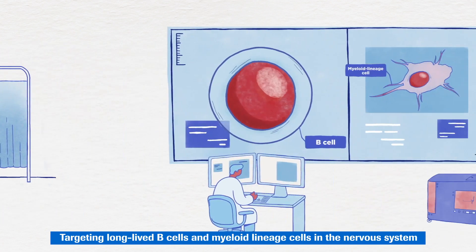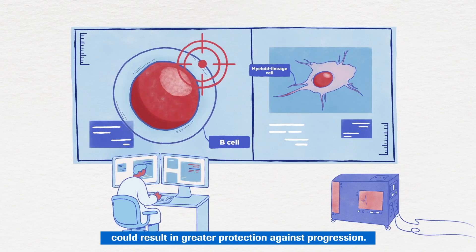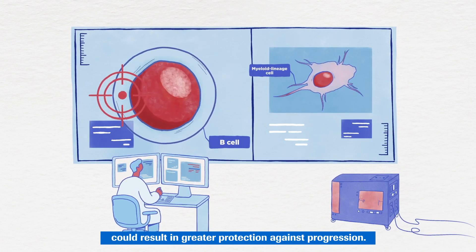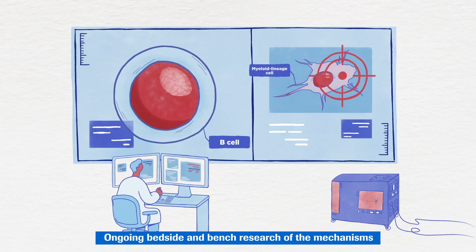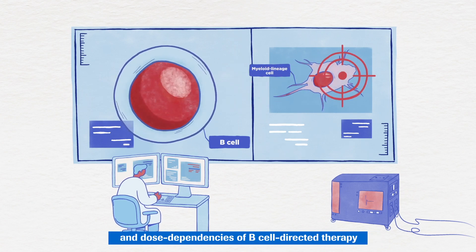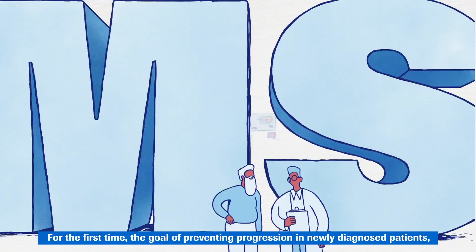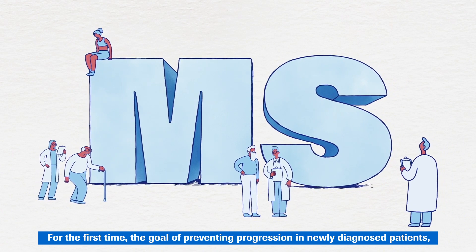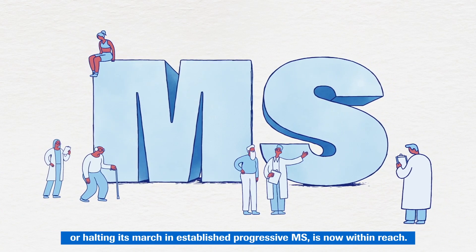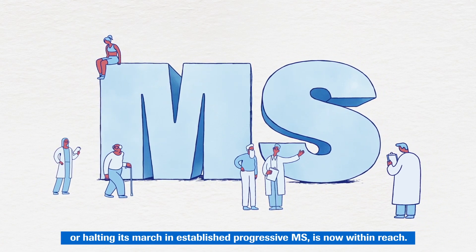Targeting long-lived B-cells and myeloid lineage cells in the nervous system could result in greater protection against progression. Ongoing bench and bedside research of the mechanisms and dose dependencies of B-cell directed therapy are advancing our understanding of MS progression. For the first time, the goal of preventing progression in newly diagnosed patients, or halting its march in established progressive MS, is now within reach.